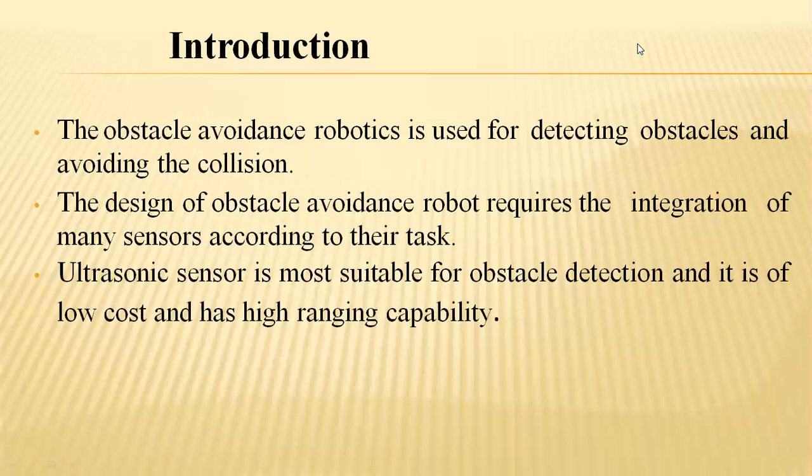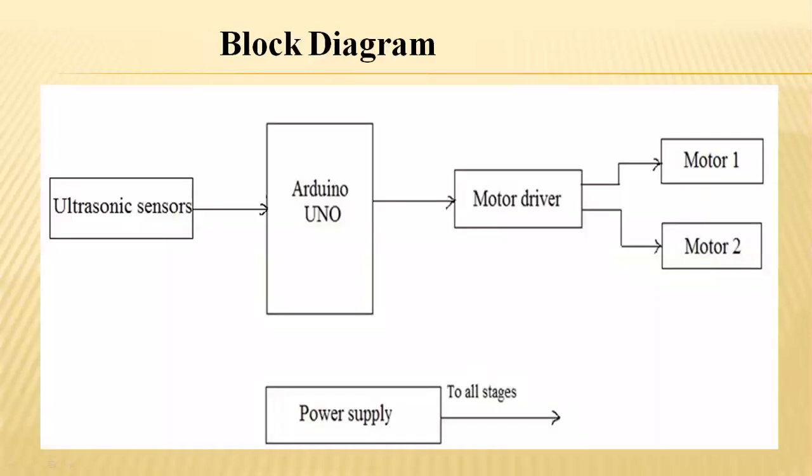Mostly the ultrasonic sensors play a major role in identifying obstacles, because their radiation capability identifies obstacles surrounding the robot with a greater frequency. They are also very much feasible from an economical point of view. This ultrasonic sensor plays a major role.